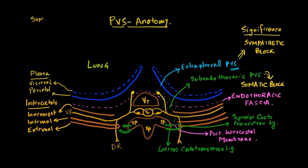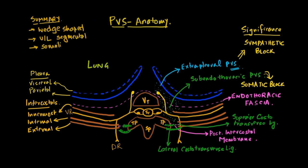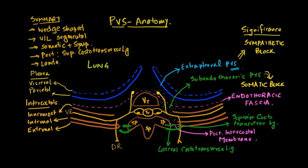To summarize, the paravertebral space is a wedge-shaped space with the lungs lying anterolateral to it and the vertebra and the spinal segmental nerve lying posterior to it. The block performed in the paravertebral space results in a unilateral segmental spread, which may be a combination of somatic and sympathetic spread. The superior costal transverse ligament bounds the paravertebral space posteriorly, and loss of resistance to this ligament marks the entry of the needle into the paravertebral space. This block may be performed either using landmark technique or ultrasound guidance.